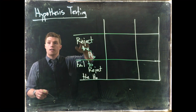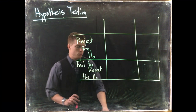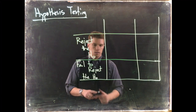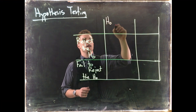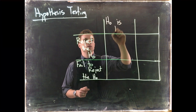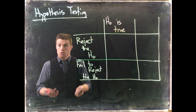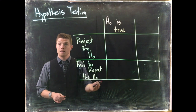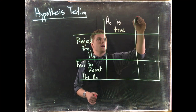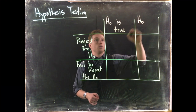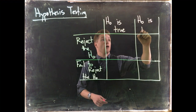These are actions that we can take when we do our analysis. Now the other dimension is whether the null hypothesis is actually true — so H naught is true — or whether the baseline assumption, the null hypothesis, is wrong.